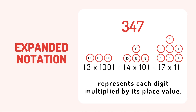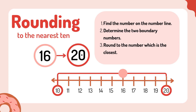Expanded notation represents each digit multiplied by its place value. Rounding to the nearest: find the number on the number line and determine the two boundary numbers, then round to the number which is the closest.